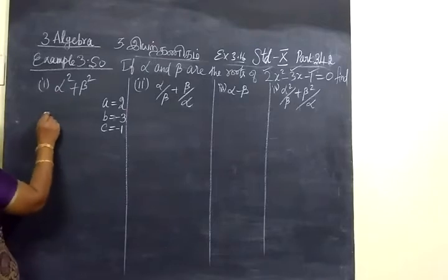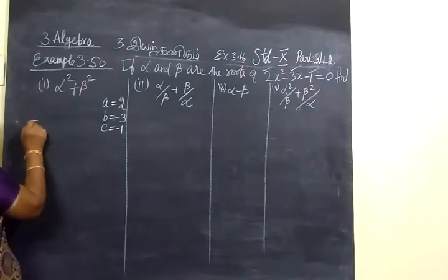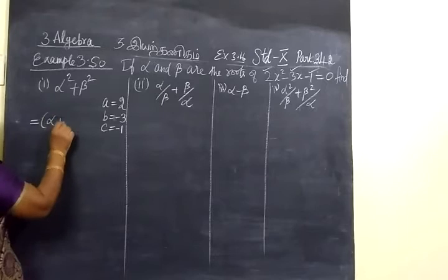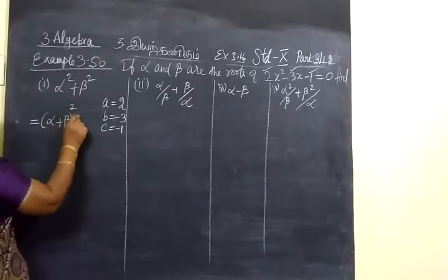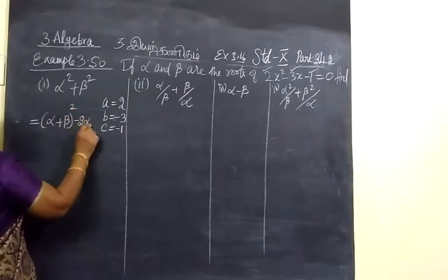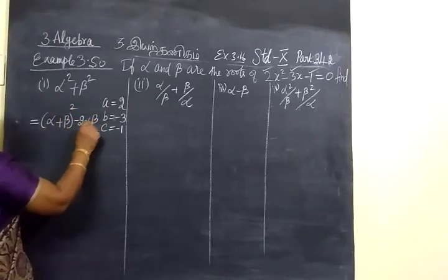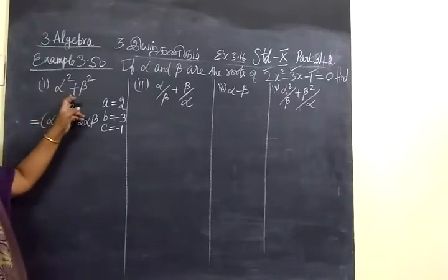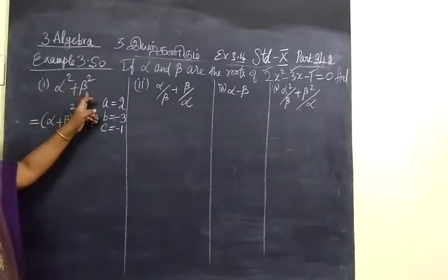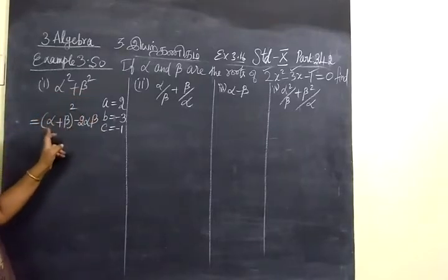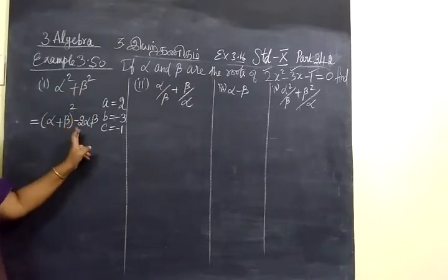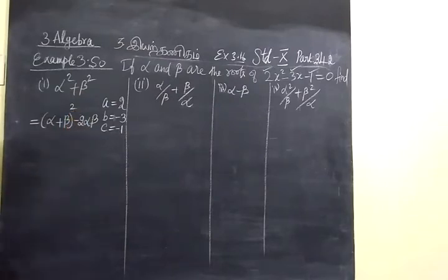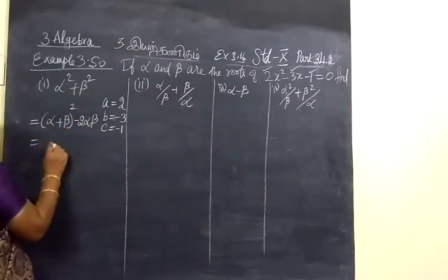Now, alpha squared plus beta squared — the formula is alpha plus beta whole squared minus 2 alpha beta. We know this identity: alpha squared plus beta squared equals alpha plus beta whole squared minus 2 alpha beta.